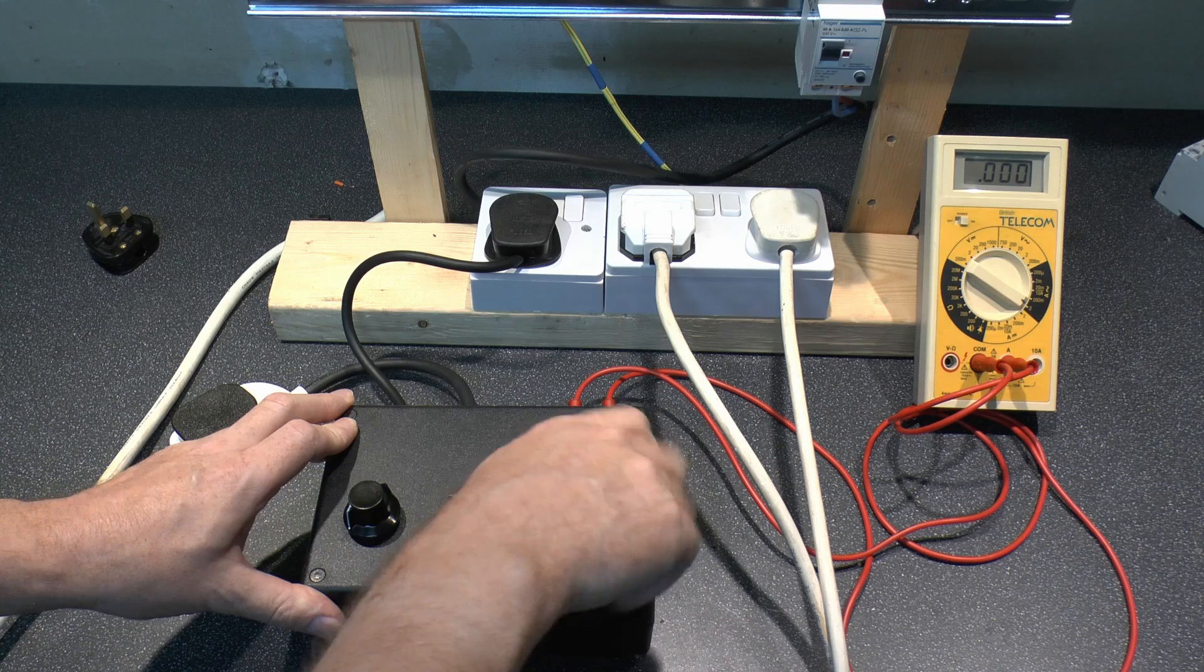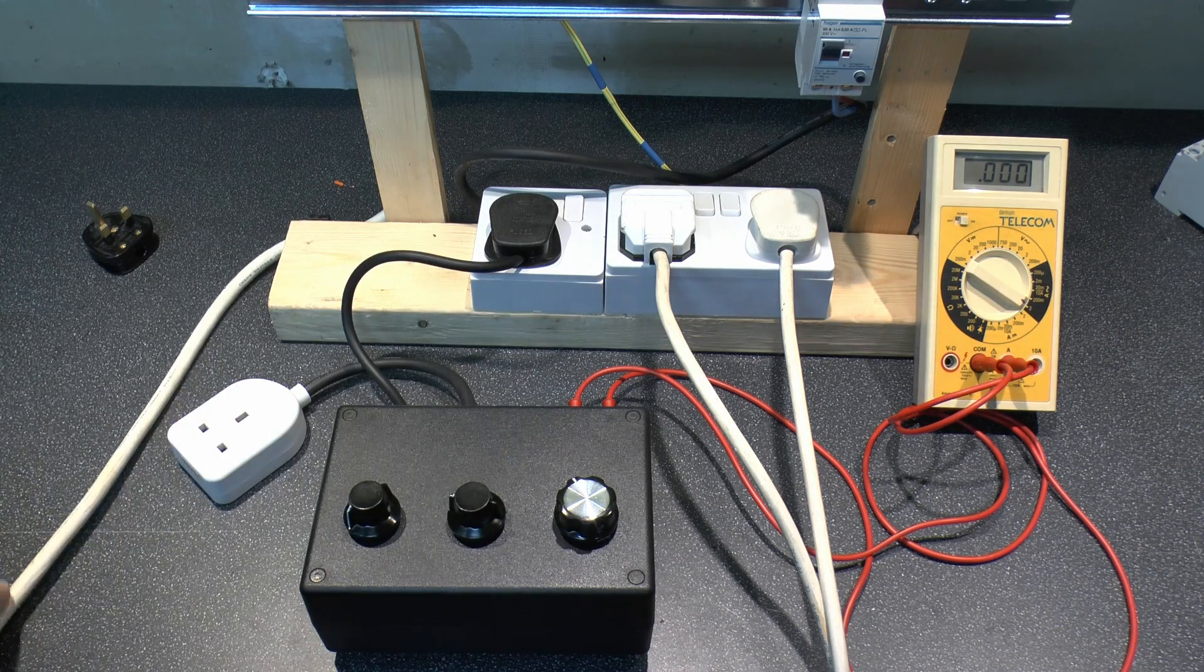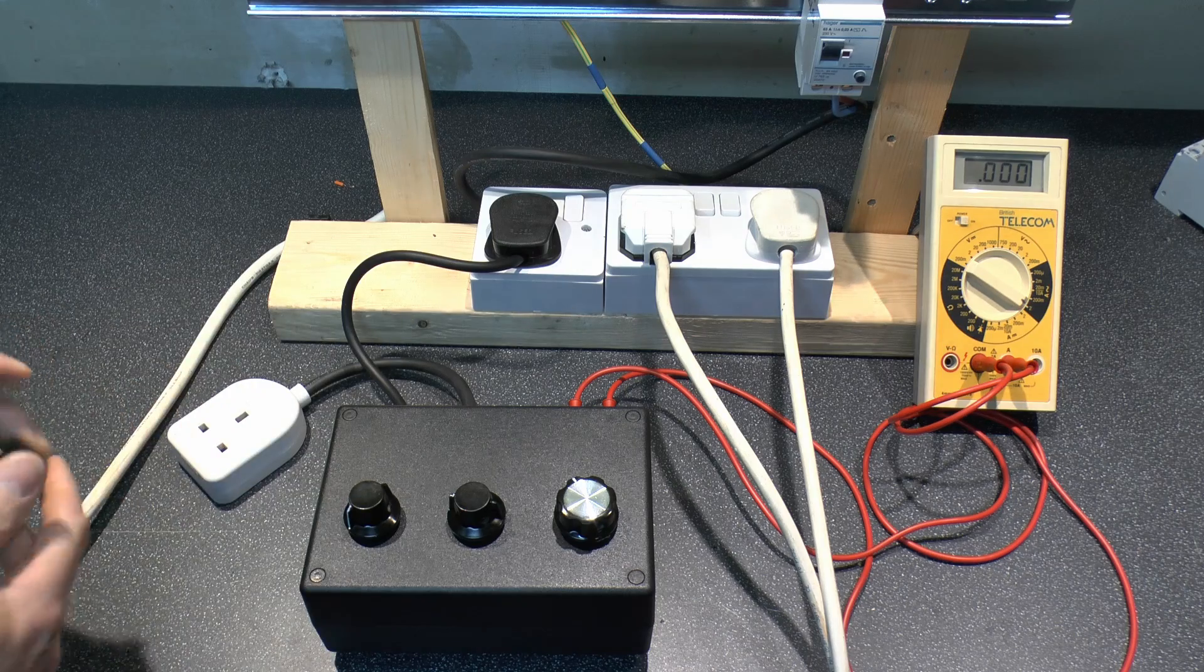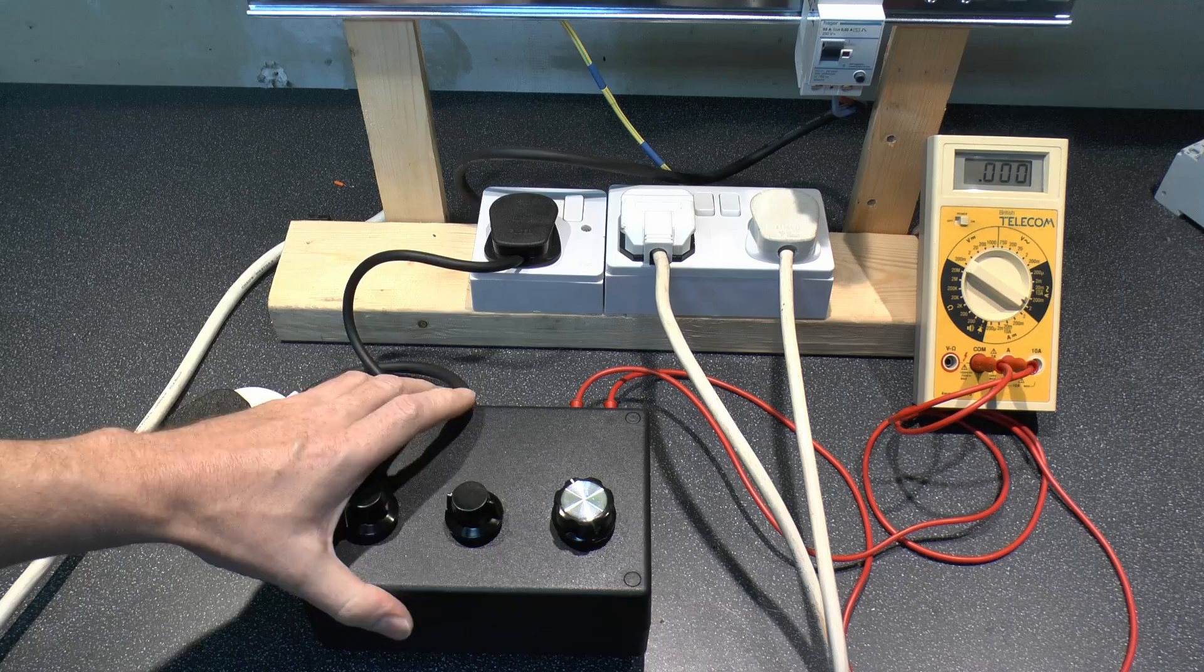Now just turn our knobs back the other way. What we can also try is the other plug which is this one. This also has a diode in but it's in the opposite direction. Will this make any kind of difference? Well our power's still on so let's just turn on here.